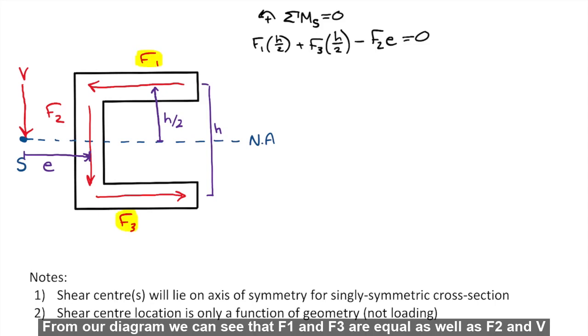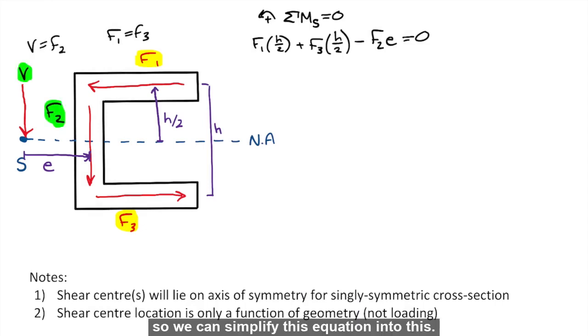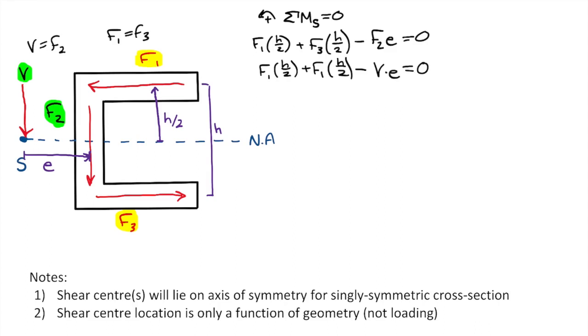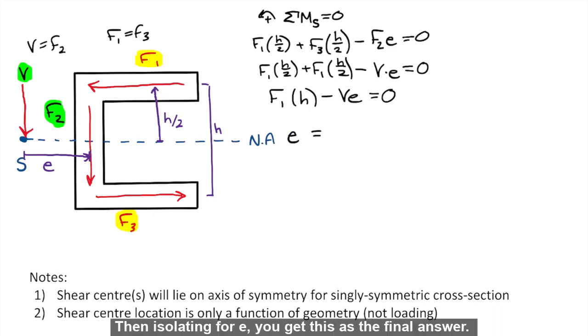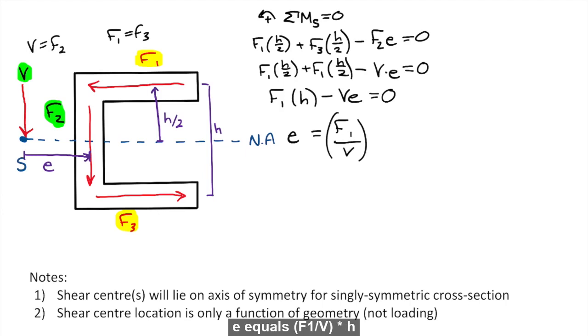From our diagram, we can see that F1 and F3 are equal, as well as F2 and V. So we can simplify this equation into this. Then, isolating for e, you get this as the final answer: e equals F1 over V times h.